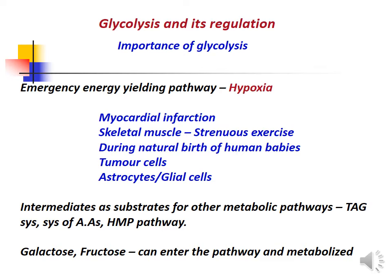Glycolysis is an emergency energy-yielding pathway under hypoxic conditions, including myocardial infarctions, skeletal muscle during strenuous exercise, during natural birth in human babies, and in rapidly growing tumor cells and astrocytes. The intermediates of glycolysis also serve as substrates for other metabolic pathways such as triacylglycerol synthesis, amino acid synthesis, and the HMP pathway. Galactose and fructose can also enter the pathway and be metabolized.